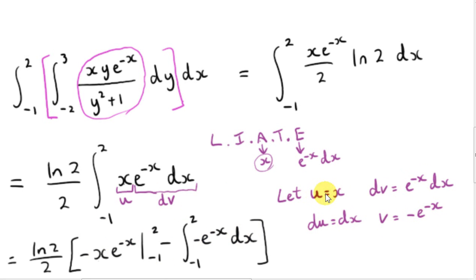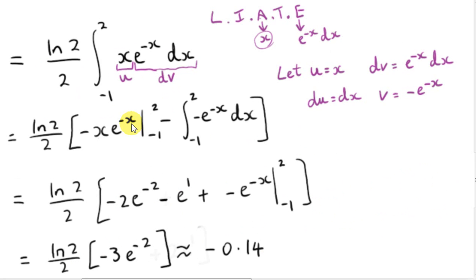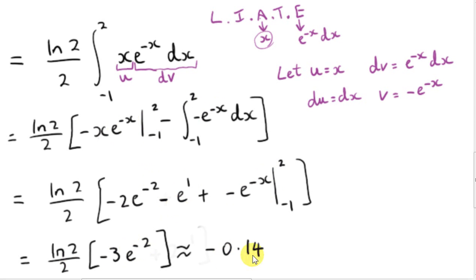v is minus e to the minus x, multiplied by du which is dx. Plugging in 2 gives minus 2e to the minus 2; then subtracting the lower limit term gives minus e to the plus 1. Integrating e to the minus x gives minus e to the minus x; plugging in the upper limit gives minus e to the minus 2, combining with the earlier term to give minus 3e to the minus 2. The e to the plus 1 terms cancel. To two decimal places, the final answer is minus 0.14.